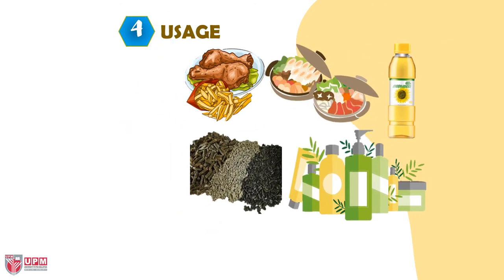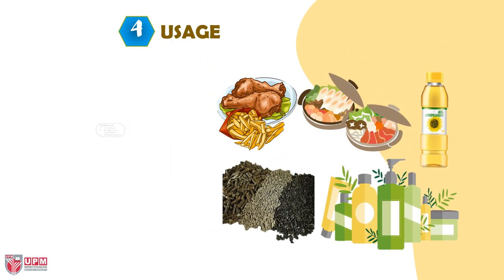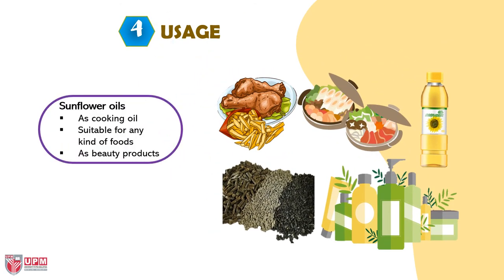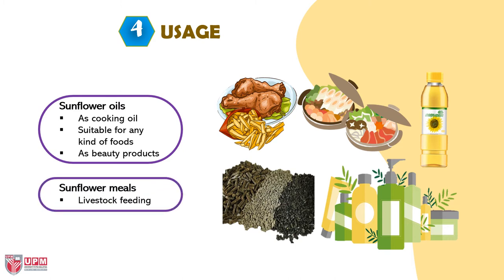The fourth stage is usage. Sunflower oil is used as cooking oil and is suitable for any kind of food. Sunflower oil is also used as beauty products, while sunflower meal is used as livestock feed.